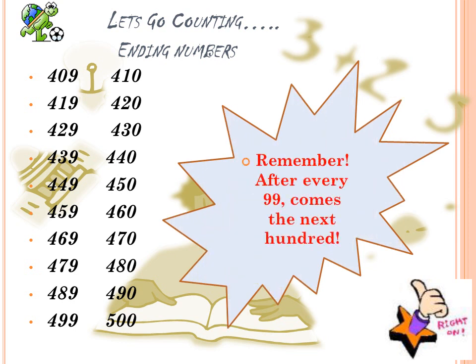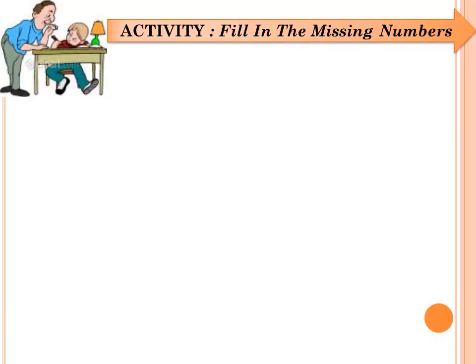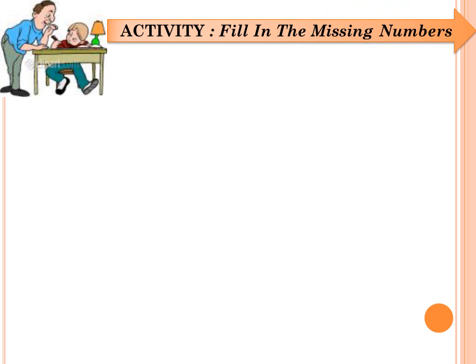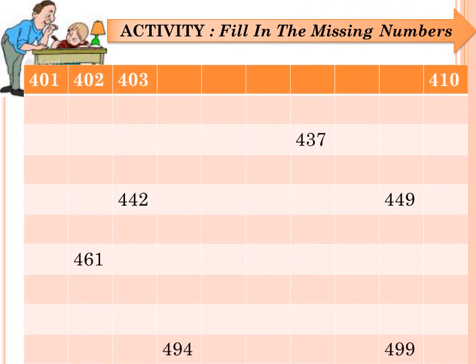Always remember that after every 99 comes the next 100. Let us go on to the activity in this lesson. The instruction is: fill in the missing numbers. The first number there is 401, followed by 402, then 403. Then there is a blank box — did I hear you say 404? Well done. Trust you can go on up to the last box. I'll give you a few minutes to do this.